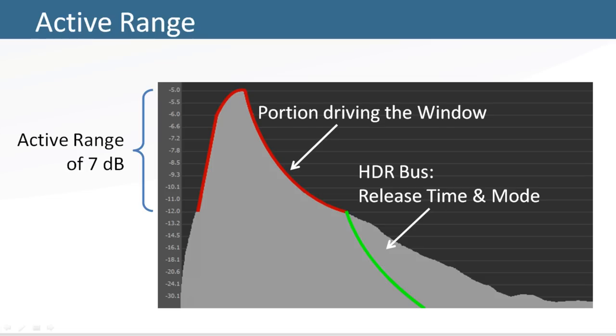This graphic shows an example of a sound with an active range set to 7 dB. The red line shows the section where the sound drives the HDR window, and the green line shows the release time set on the HDR bus.